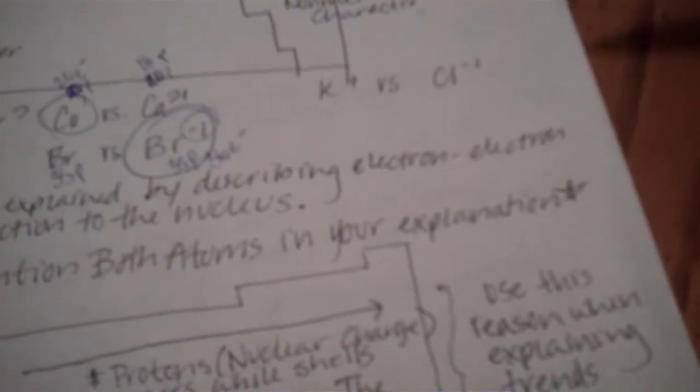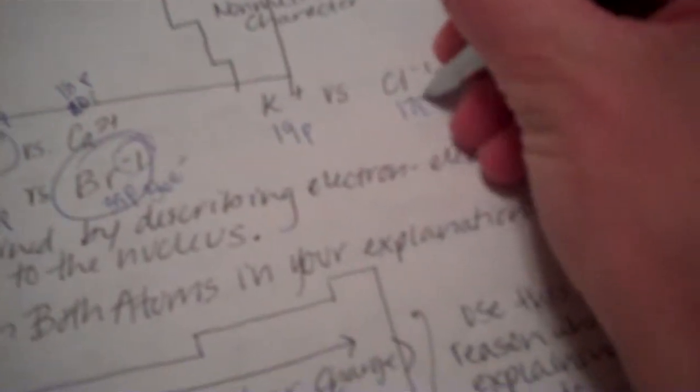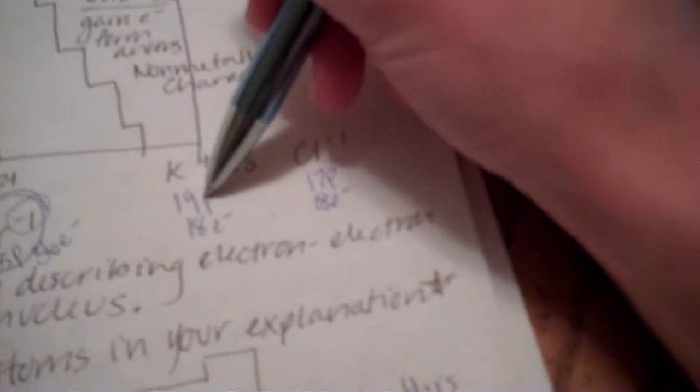So, if you get something like K+ versus Cl-, that kind of are on two different levels, you want to look at, again, let's look at the number of protons. So, when the number of electrons is equal, it's based on the number of protons, who is bigger.